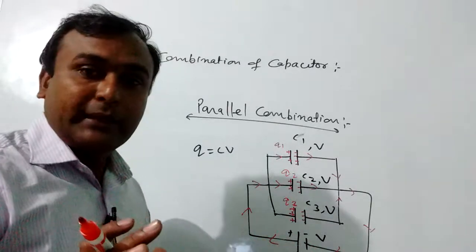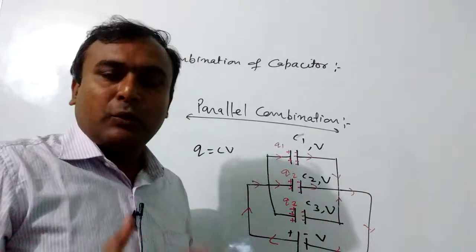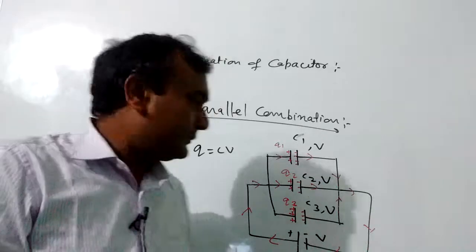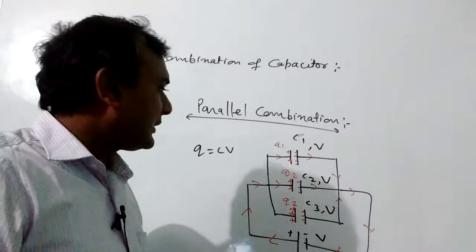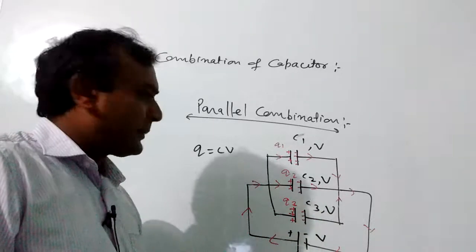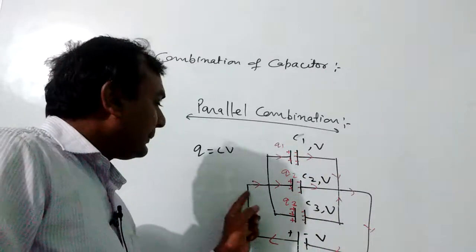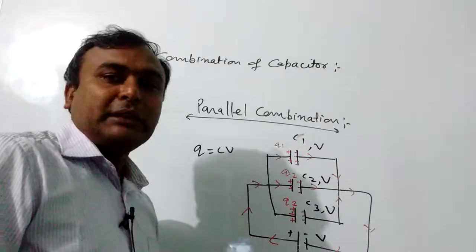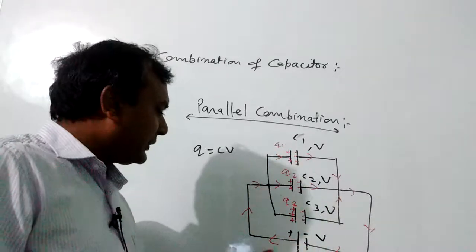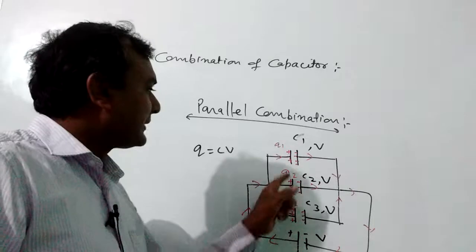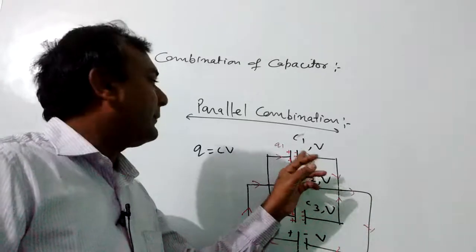The battery provides a potential difference. Where a charge conductor exists, charge flow occurs. Along the charge path, positive and negative potential difference is supplied from the negative pole. Points connected to the positive pole become positively charged, and the plates of the three capacitors become negatively charged on the other side.